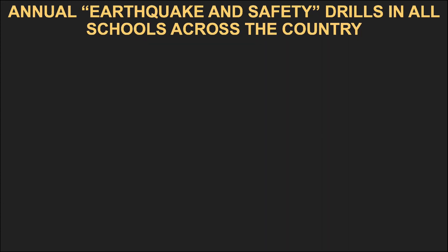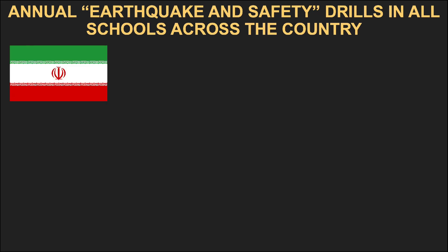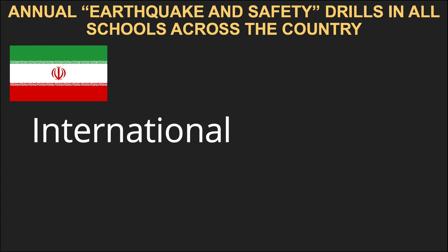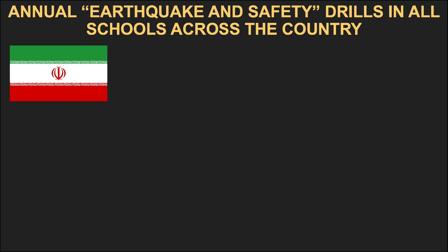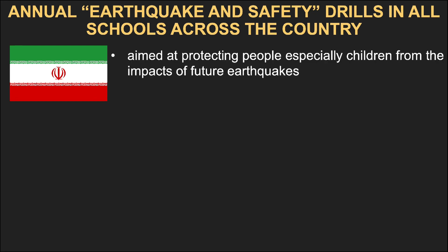The last project is the Annual Earthquake and Safety Drills in All Schools Across the Country from Iran. Iran has sought to educate children and youngsters on disaster preparedness at all school levels on a national scale, in both urban and rural areas. Earthquake and safety programs have been carried out in the country since 1991 by the Iran-based International Institute of Earthquake Engineering and Seismology, or IIEES, and school safety programs have been underway since 1996. The initiative is part of a series of activities aimed at protecting people, especially children, from the impacts of future disasters — a comprehensive program that addresses all groups in society.